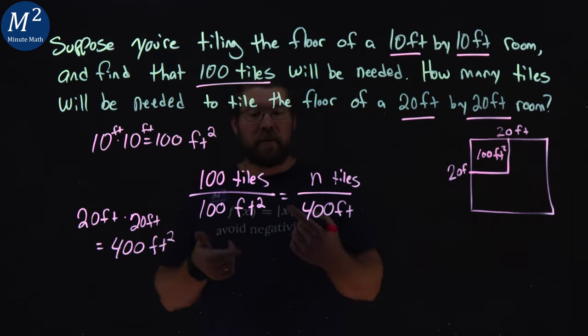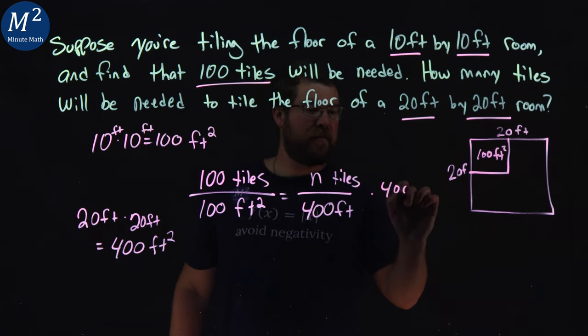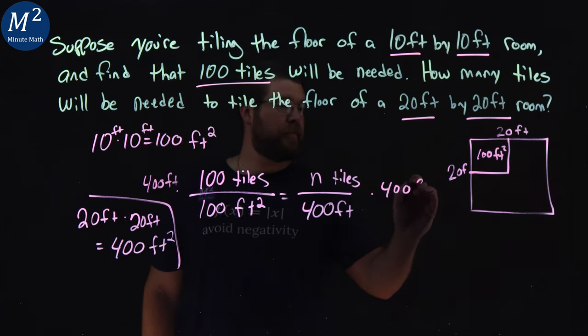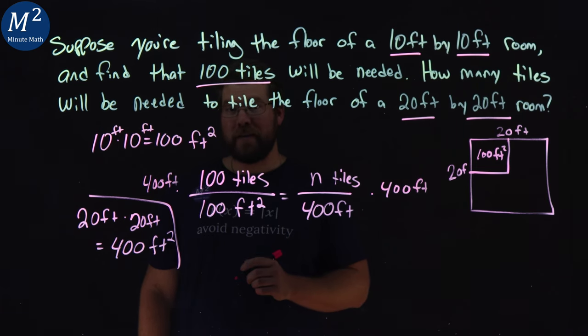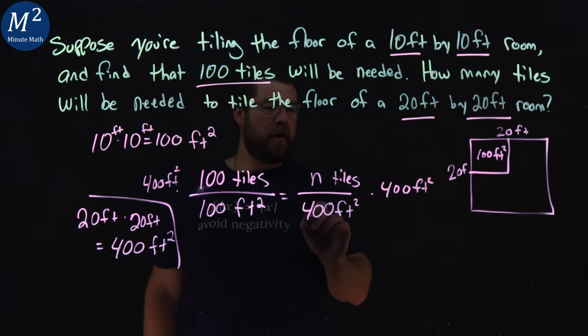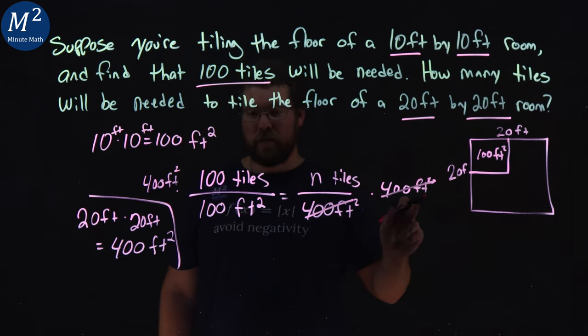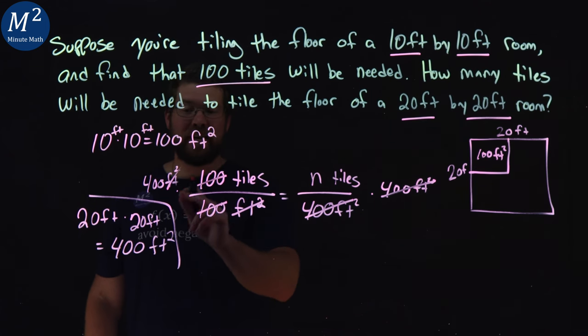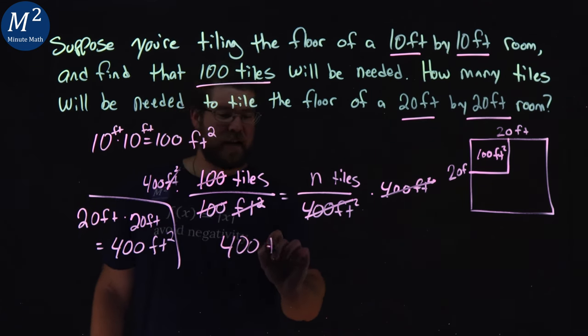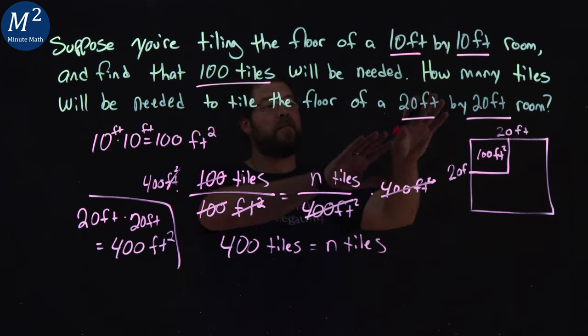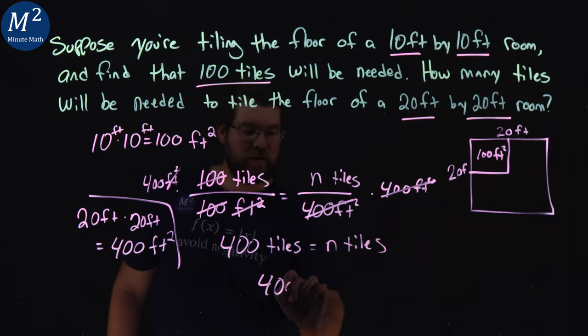All right, so now here we just want to multiply 400 to both sides. 400 feet right there. And notice how our units are going to cancel here. Feet squared. There we go. 400 feet squared cancel on the right. Feet squared cancels. Feet squared cancels here. And we have 100 over 100 is going to be one. So really we have 400 tiles equals n tiles. So if we have a 20 foot by 20 foot room, we'll need 400 tiles.